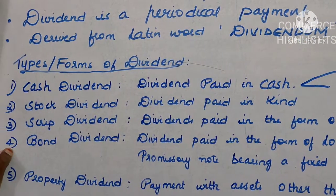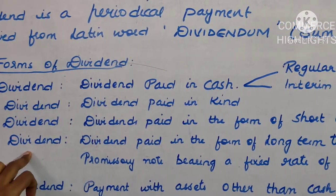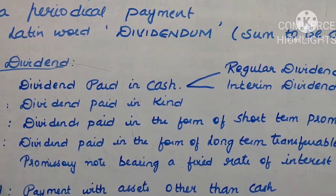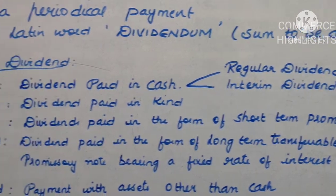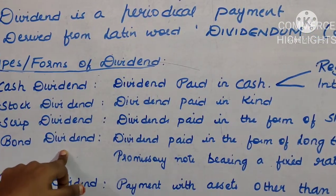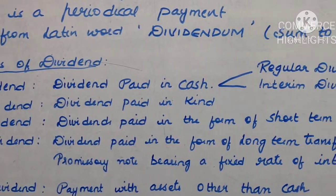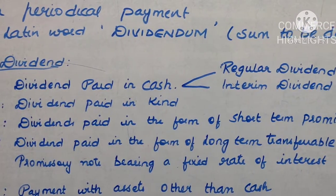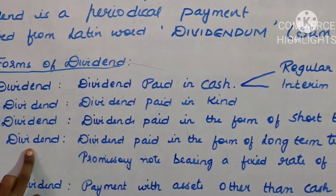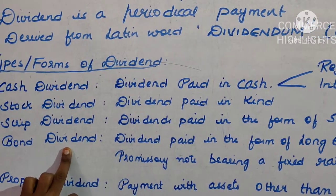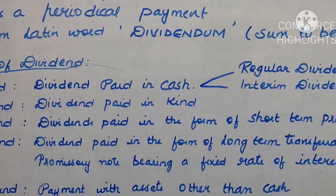Bond dividend is when any dividend is declared to shareholders in the form of a long-term promissory note with a fixed rate of interest. This dividend is generally paid when the company doesn't have enough cash in hand, or if its earnings are not accurate.